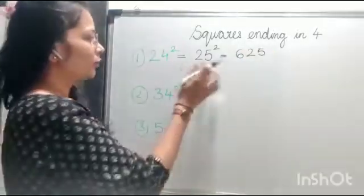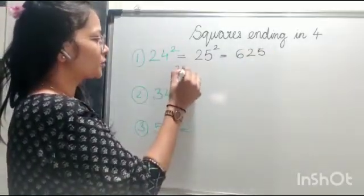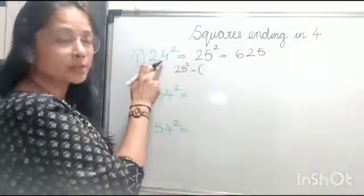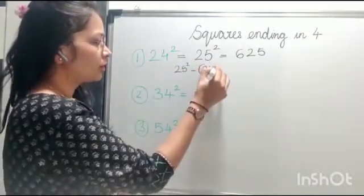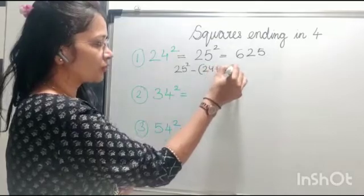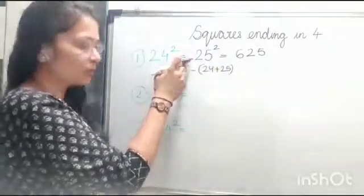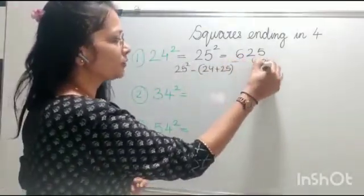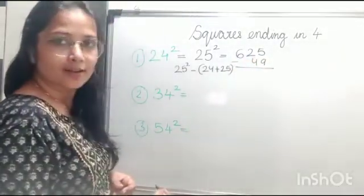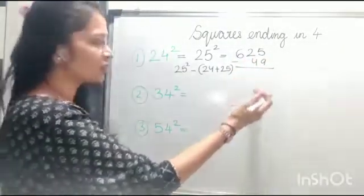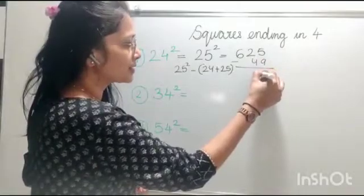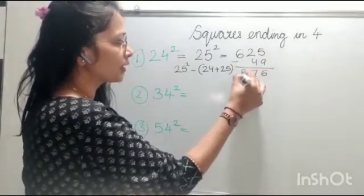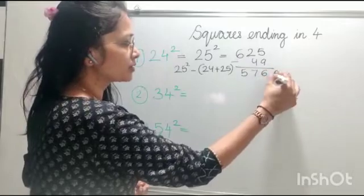The formula is: when you have 25 squared, you subtract the sum of the number 24 plus the number 25 from it. So that's minus 49 from 625. Performing the subtraction: 625 minus 49 gives us 576. And this becomes your answer.